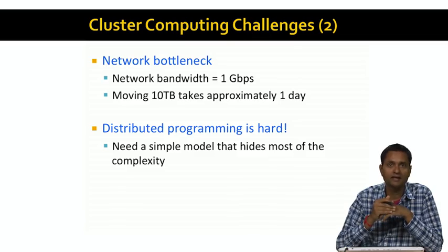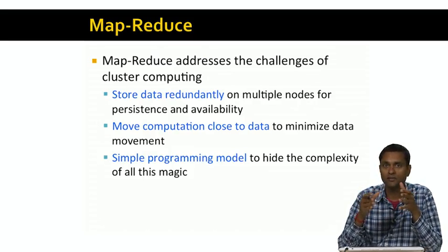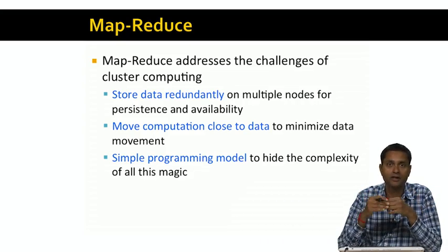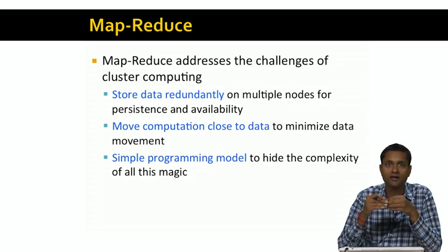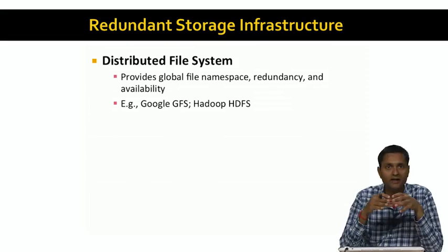We looked at three problems that we face with cluster computing, and MapReduce addresses all three of these challenges. First, the problem of persistence and availability when nodes fail: the MapReduce model addresses this by storing data redundantly on multiple nodes, so that even if you lose one node, the data is still available on another. Second, the network bottleneck problem caused by moving data around: the MapReduce model moves the computation close to the data and avoids copying data around the network, minimizing the bottleneck. Third, the MapReduce model provides a very simple programming model that hides the complexity of all the underlying infrastructure.